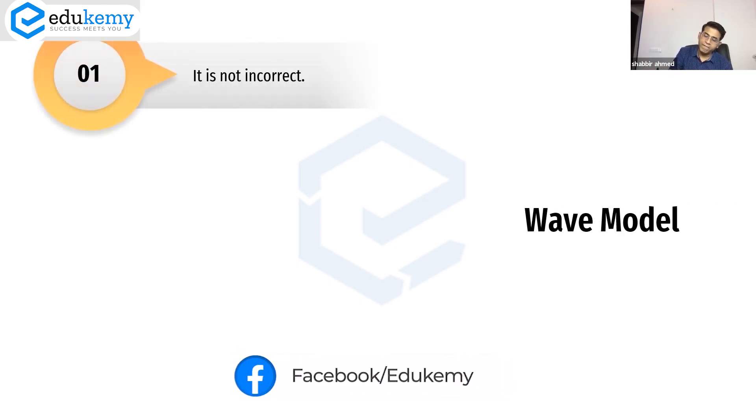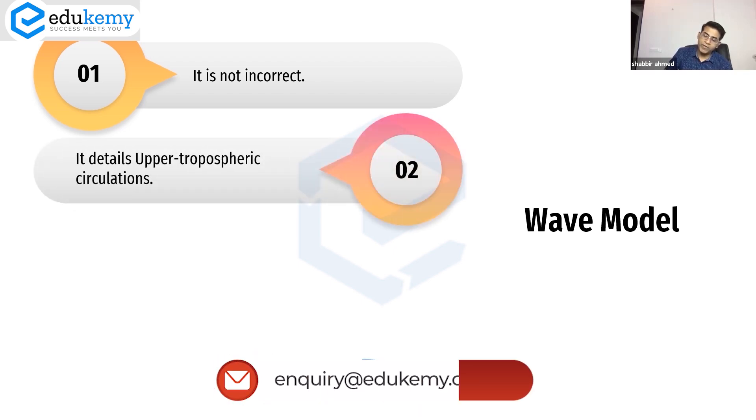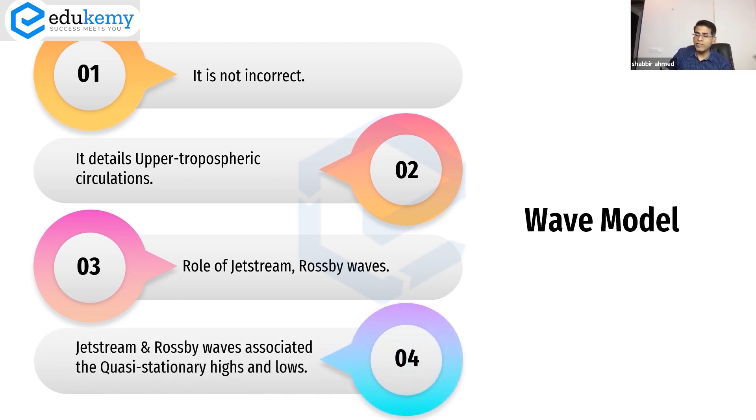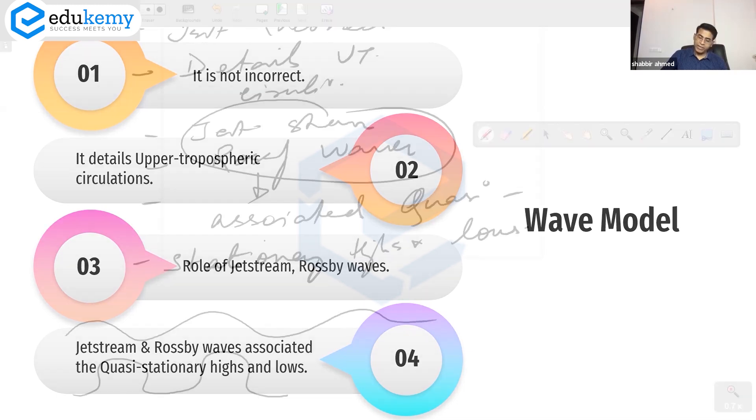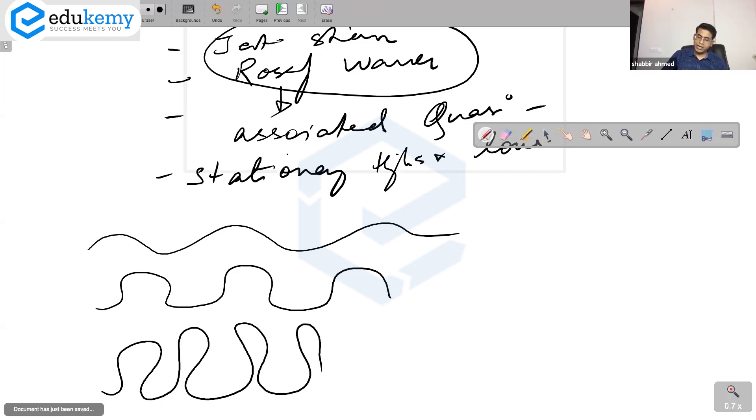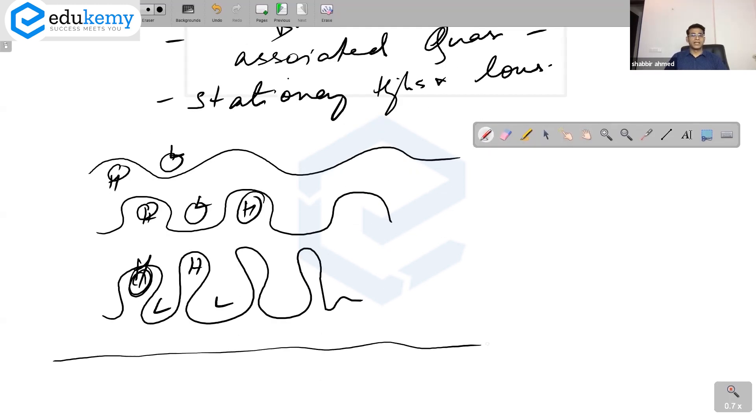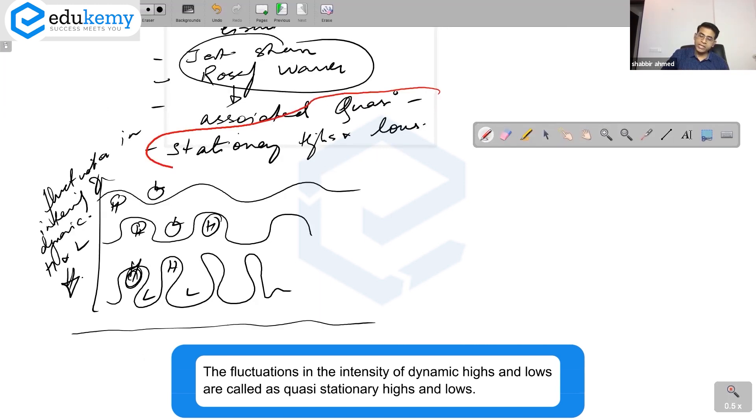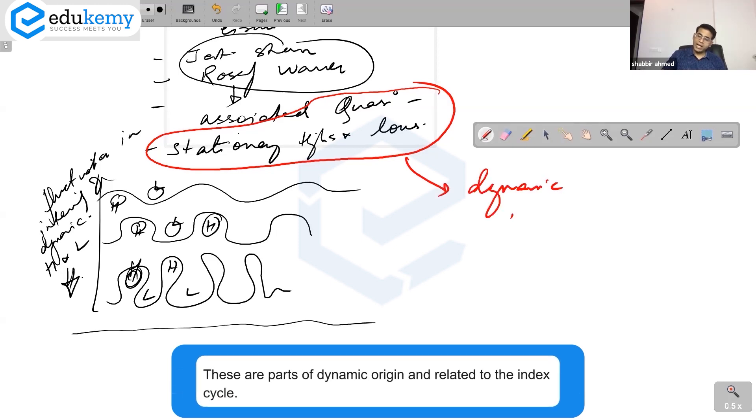This is a summary of the criticisms against the thermal model and Ferrel's model. Then we'll talk about the wave model. Now, wave model is not incorrect. It details upper tropospheric circulations, jet streams, Rossby waves, and the quasi-stationary highs and lows. You have the meandering—very sharp meandering—this is a low pressure, this is a high pressure, and eventually it breaks up. These are called quasi-stationary highs and lows.